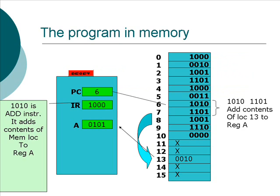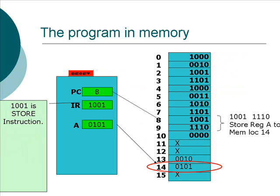The only thing we have left to do now is to store that result in location 14, which was the goal of our program. So the program counter increments to memory location 8, which contains 1, 0, 0, 1 — that is loaded into the instruction register, and the processor interprets that as a STORE command. The next memory location contains 1, 1, 1, 0 — which corresponds to 14 — so it takes register A and stores it in location 14. The value in memory location 14 is now 0, 1, 0, 1, which was the value in register A.